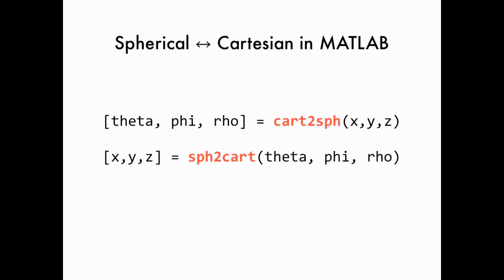So MATLAB does contain two functions, just like with polar and with cylindrical coordinates, for converting back and forth between Cartesian coordinates. The first one is cart to sphere, c-a-r-t-to-s-p-h, and that converts from Cartesian coordinates x, y, z to spherical coordinates theta, phi, rho.